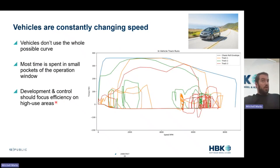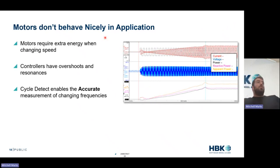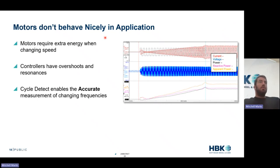From a development standpoint, why focus on the full map when we could focus on these high-use areas? This is where the real-world vehicle duty cycle and cycle detection come together. These motors don't behave nicely in the application. As we're speeding up, slowing down, and changing torques, the motors require extra energy to perform these tasks.